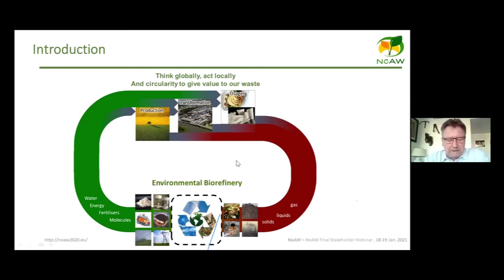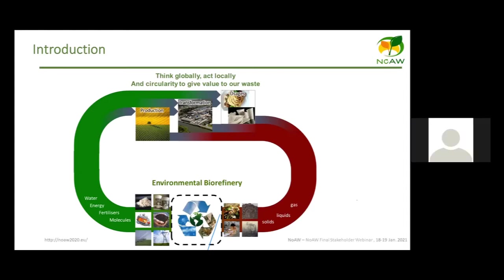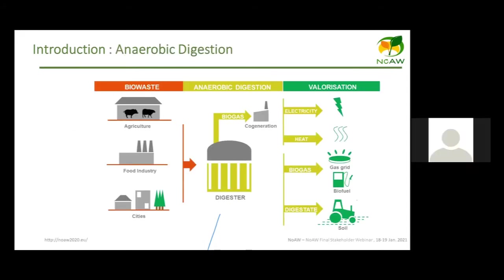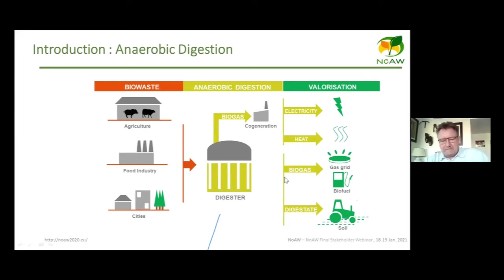This yields a significant waste of energy. To do better, we need to go circular and give value to waste — whether gaseous, liquid, or solid — converting it into clean water, energy, fertilizers, and high-value molecules. At the center of this is an environmental bio-refinery, where anaerobic digestion converts bio-waste from agriculture, food industry, or cities into biogas, electricity, heat, biofuel, or grid-injectable gas, as well as digestate.